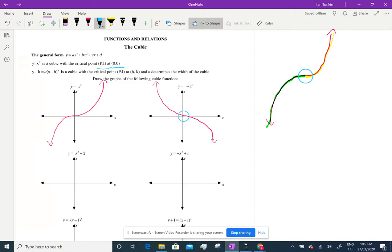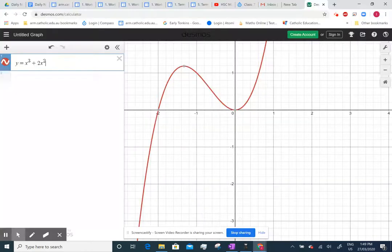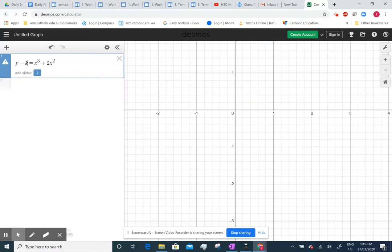Now, in a cubic with a critical point at h, k, we can write it like that. Where a determines the width. So you know that a is going to play with the steepness of the curve. So let's go back to Desmos and just have a look at what that does. So if we write y minus k, we're going to add all sliders. So I'm just going to put an a, x minus h, cubed, which is the version that we want.